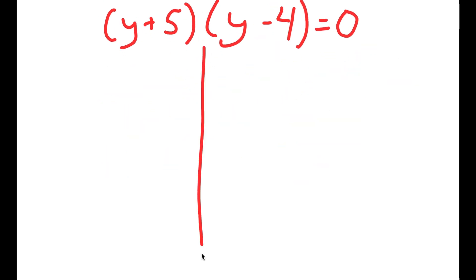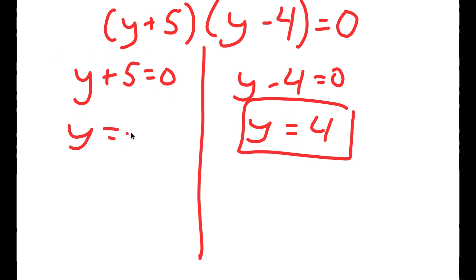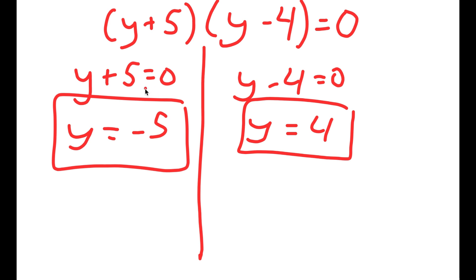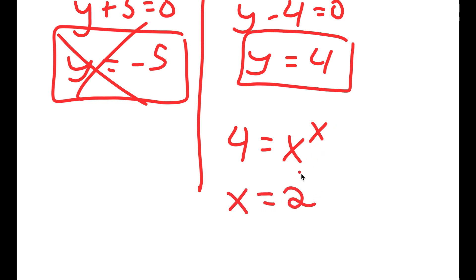From the entire equation, I'm going to factor out y plus 5, so I have y plus 5 times y minus 4 is equal to 0. This gives me two equations: y plus 5 equals 0, giving y equals negative 5; and y minus 4 equals 0, giving y equals 4. Because y equals negative 5 is negative, it's not possible — since y equals x to the power of x, you can't get a negative result that way. So I get 4 equals x to the power of x, and the number that works is x equals 2, because 2 to the power of 2 is 4. So x equals 2 is my answer.